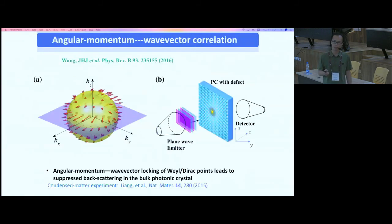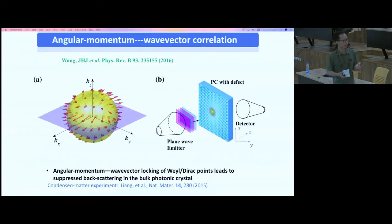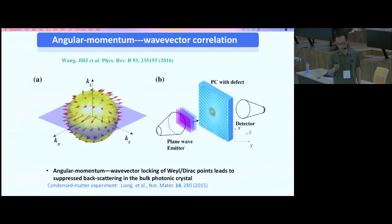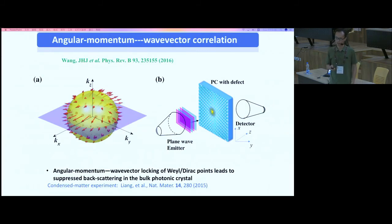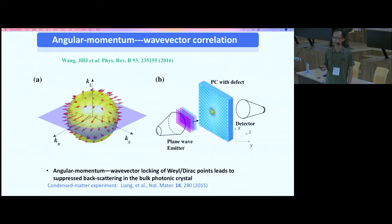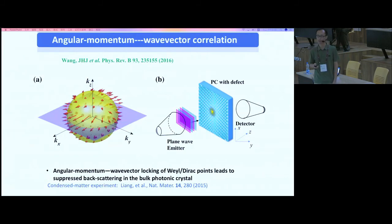If you compute the total angular momentum of the photon on a tiny sphere surrounding a Weyl point, you see a hedgehog configuration — the angular momentum radiates outward — which originates from the topological nature of the Weyl point. This angular momentum-momentum locking near Dirac or Weyl points means that back-scattering of a propagating wave in this photonic crystal is strongly suppressed, and the wave propagates very robustly forward.